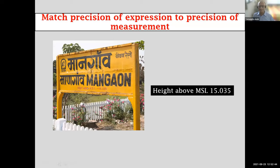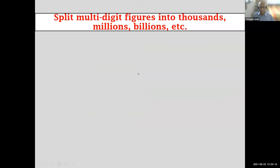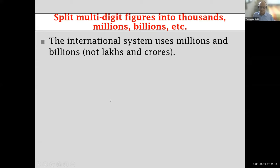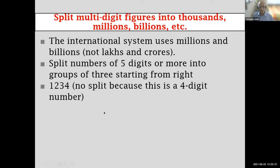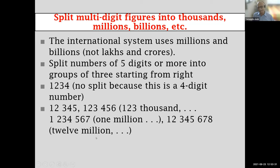Be precise in your measurements but not over-precise. For example, 'height above mean sea level: 15.035' is missing its units — never omit units — and expressing height to three decimal places is almost certainly beyond the precision of any measuring device. If you are using multi-digit figures, remember that foreign journals use thousands, millions, billions — not lakhs and crores. A six-digit figure should be presented as 123,456, not 1,23,000.